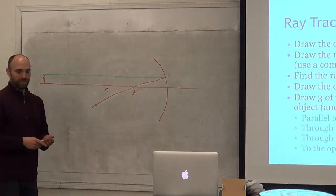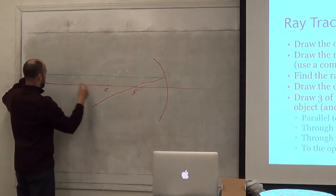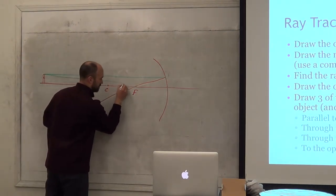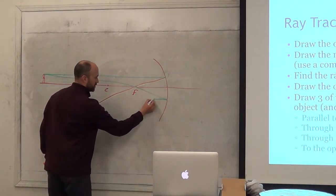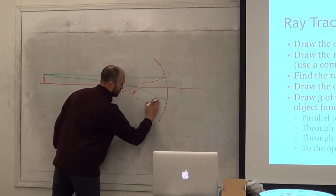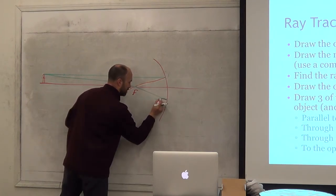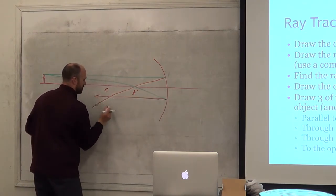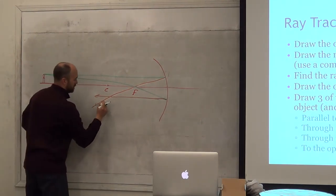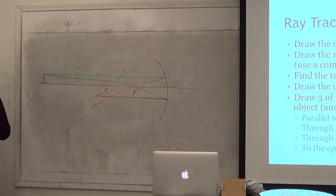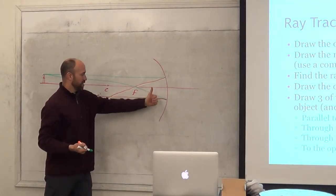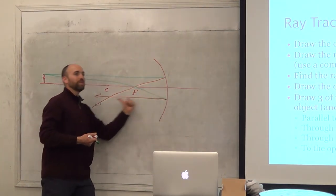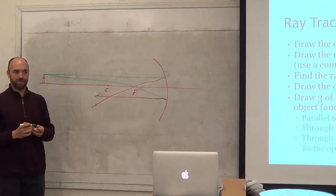Known line number two: through the focal point. That means you draw a line from the top of your object through the focal point. It goes in like this, hits your mirror, and where does it go? It's going to come back parallel to the optical axis. How do I know? Because if you sent a parallel line in, it would go through the focal point — so if you go through the focal point going in, it comes out parallel. That's the reverse.